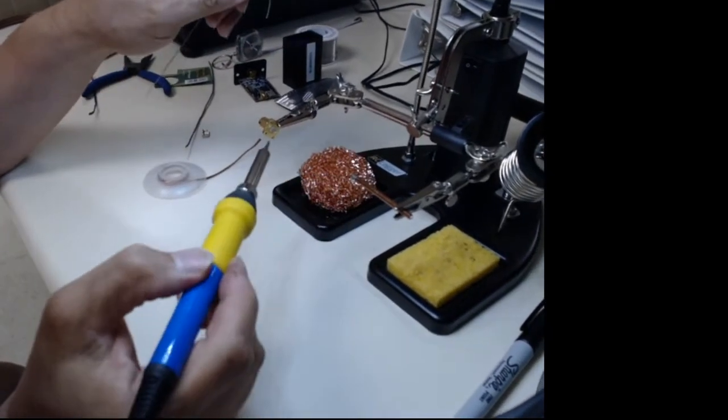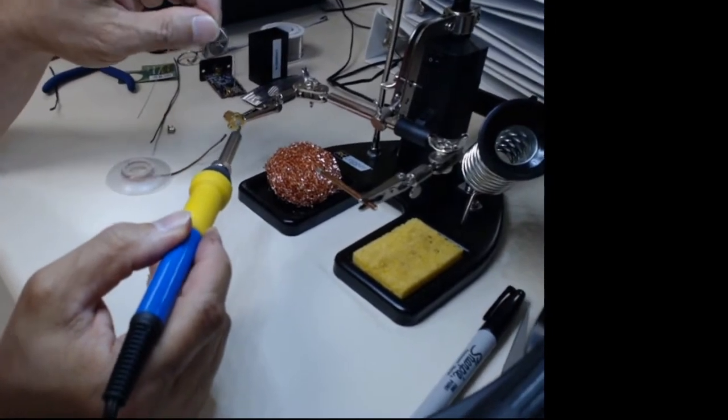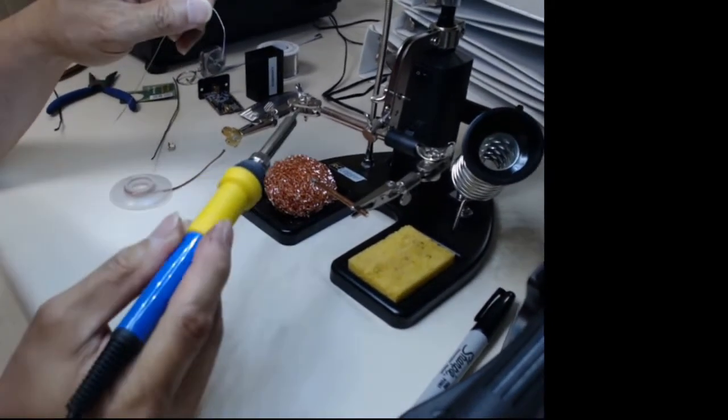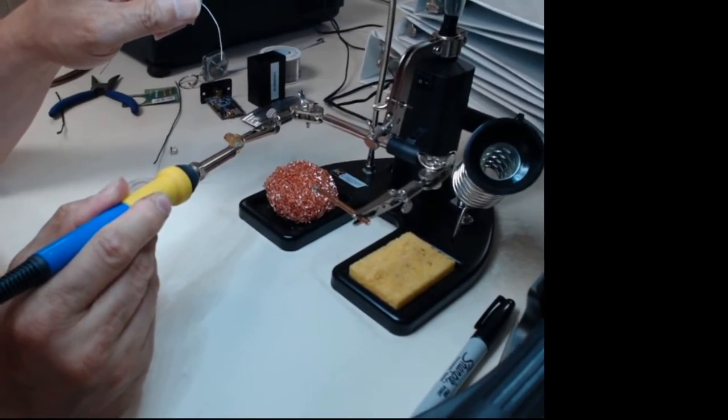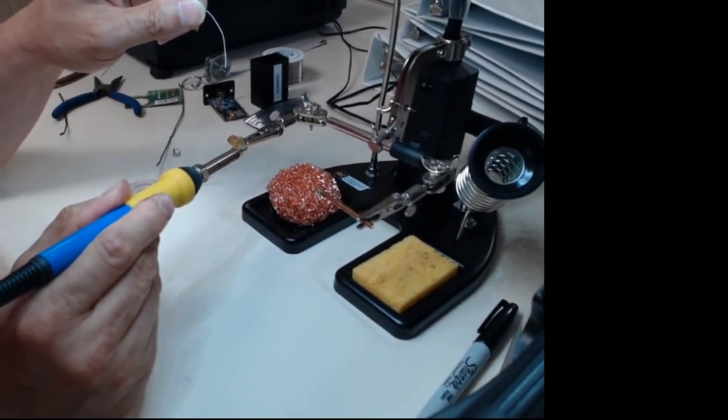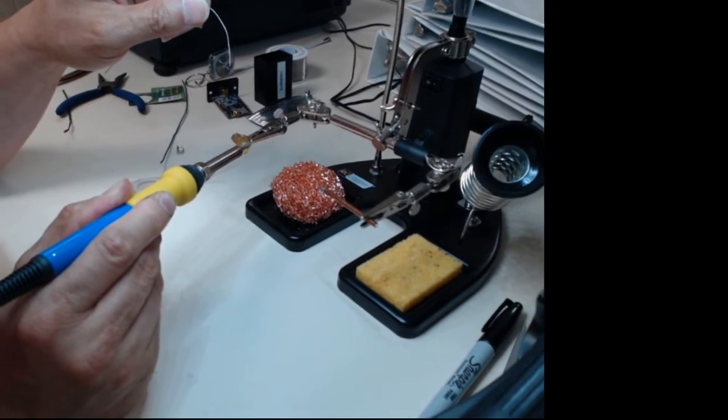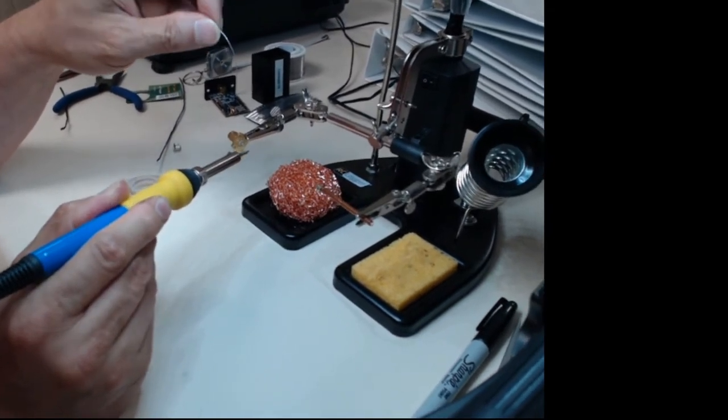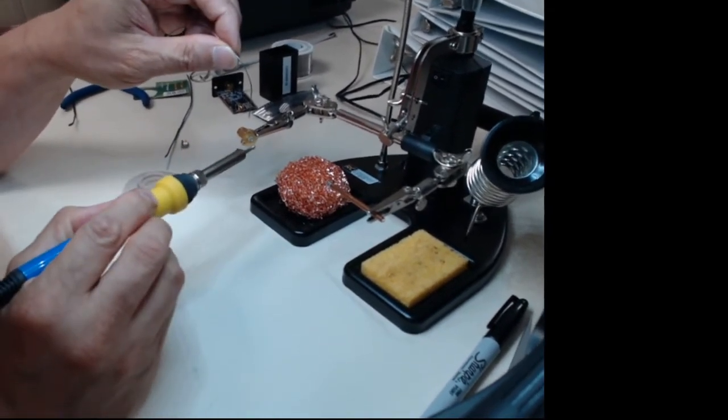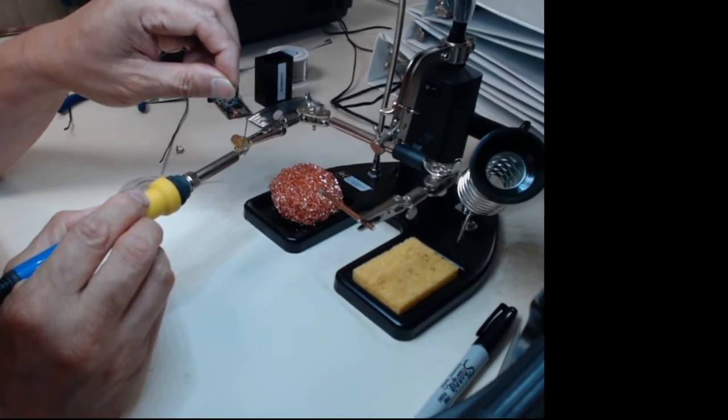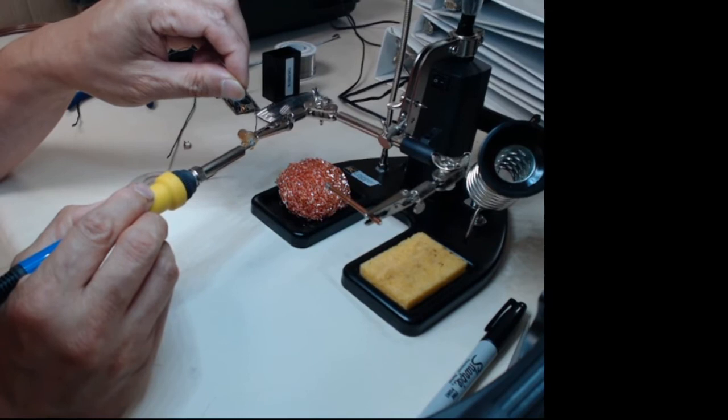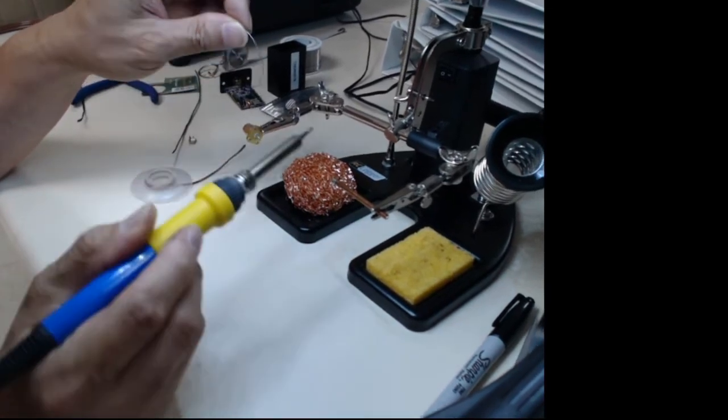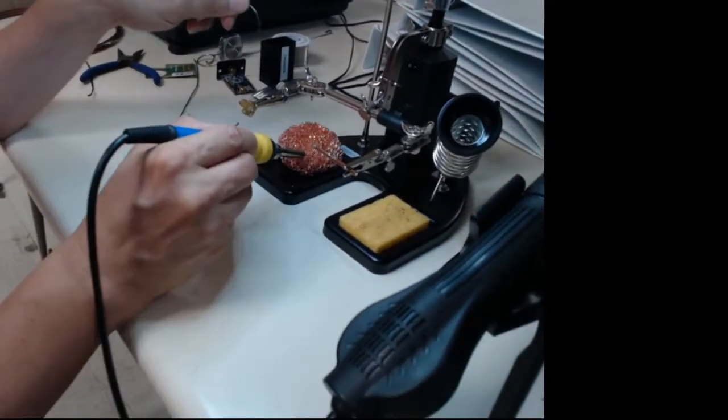You don't want it too much because you don't want it to overflow and actually touch or overlap the insulation. Because then, of course, you create a little short and that's not what you want to do. I can tell it's hot. All right, we can clean that a little bit.